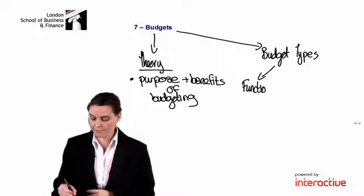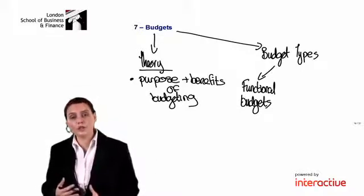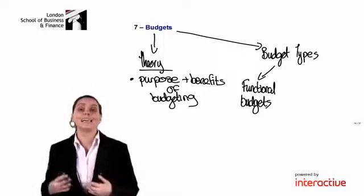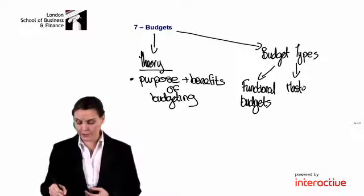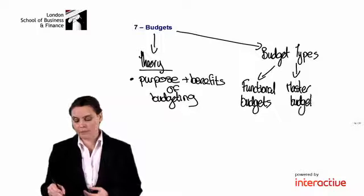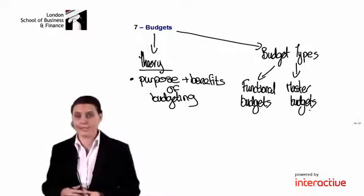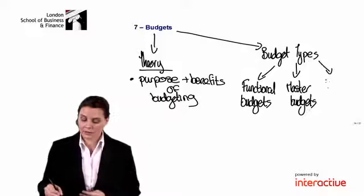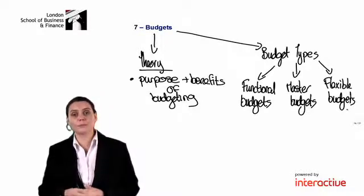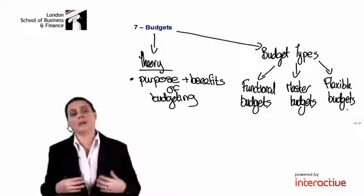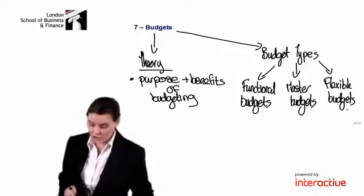In budget types we can have our functional budgets, which are prepared first. These include our sales budget, production budget, materials budgets, and labour budgets. Once we've prepared our functional budgets we can prepare our master budgets: our cash budget, our budgeted income statement, and our budgeted statement of financial position. You may also be asked about flexible budgets - remember flexible budgets are budgets which are adjusted to reflect our actual level of activity.